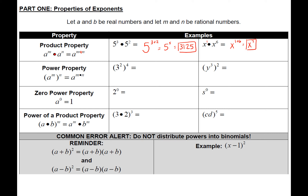The next rule is the power property. If you have a base raised to a power, and then that quantity is raised to a power again, we're going to multiply those two exponents. So three squared raised to the fourth power equals three raised to the two times four, giving us three to the eighth, which is 6561. With variables, y squared raised to the third power: two times three simplifies to y to the sixth power.